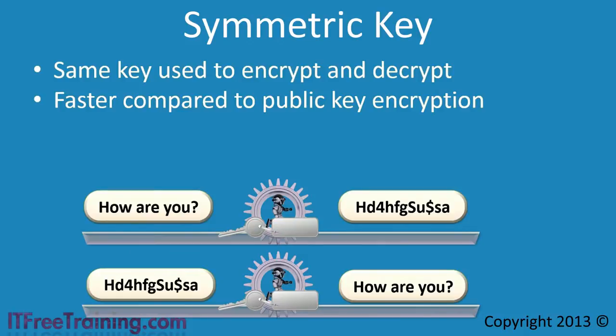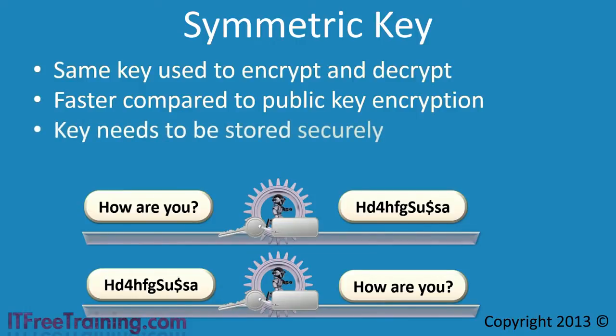The problem with this method of encryption is that in order for data to be decrypted, the key must be available. This causes two problems. The first problem is the key needs to be stored securely. If an attacker were to gain access to this key, they could decrypt any data that key was used to encrypt. It is common for symmetric keys to be stored in a safe place and only accessed when required.